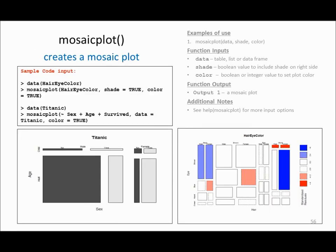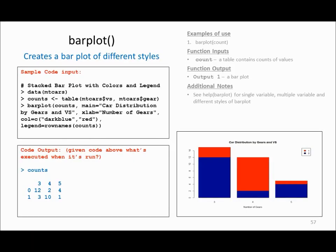Mosaic plot is a very interesting plot in R. In this example I have a dataset called Titanic, and within one plot I am comparing many attributes — sex, age, adult versus child, and male versus female. The mosaic plot tells you the complete story about your data and allows you to compare more than two attributes in one plot.